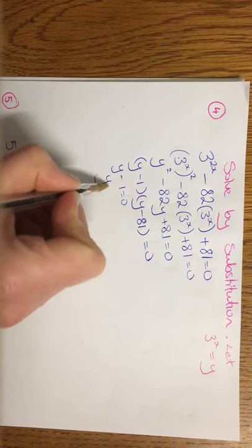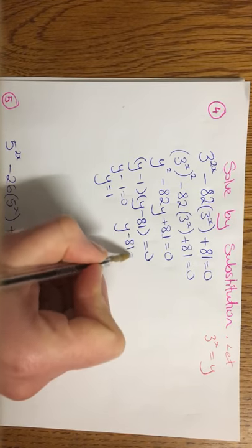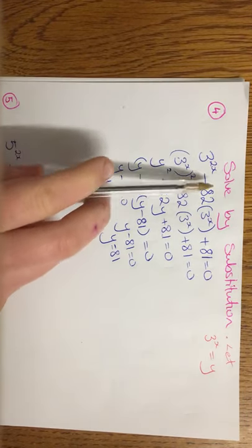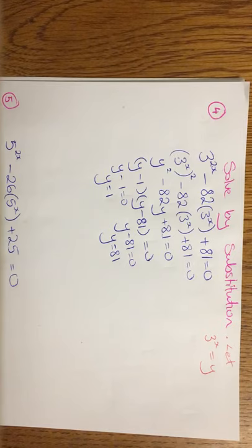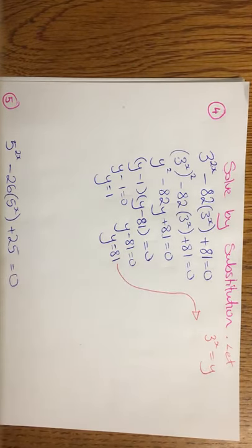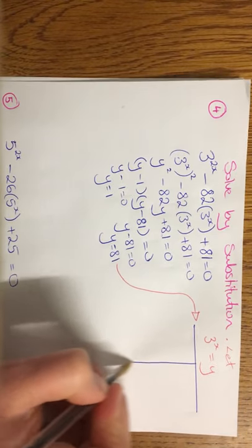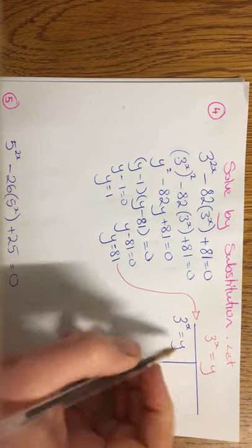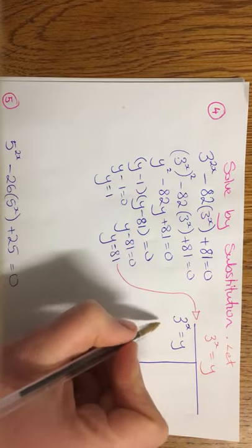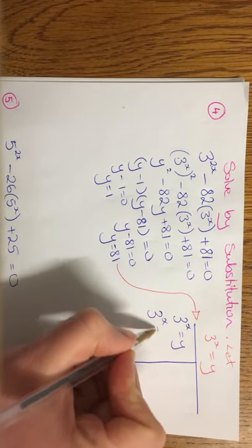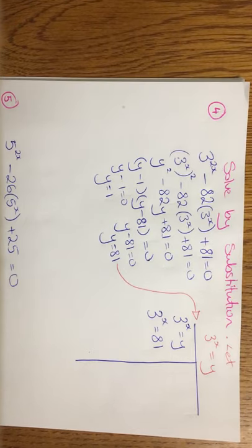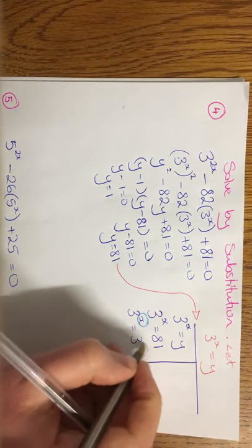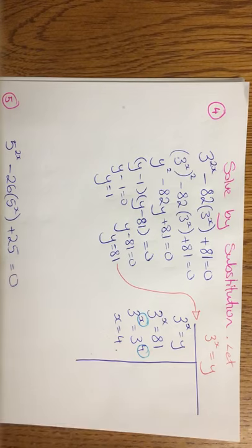So y minus 1 equals 0, y equals 1. Y minus 81 equals 0, y equals 81. But don't stop there, because you're actually looking for x. You're not looking for y. You just use that for your substitution. So I'm going to go back up here then. And I have to kind of solve this twice now. So 3 to the x is equal to y. So the first value I got for y was, we'll just go to 81 because you'd normally put that first. So 3 to the x is equal to 81. How would I solve that? Get the same base on both sides. So 3 to the x is equal to 3 to the 4. Circle, circle. x is equal to 4.